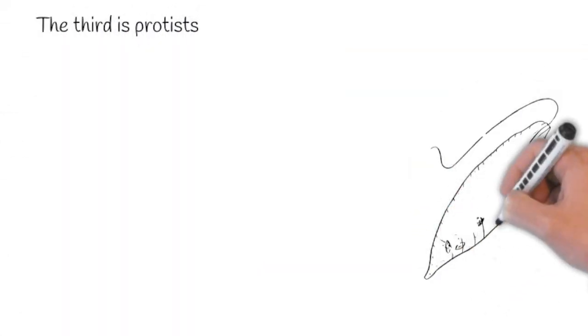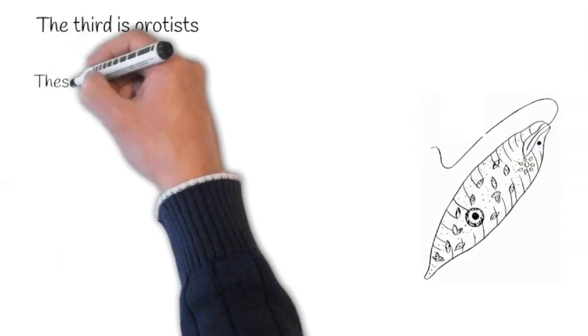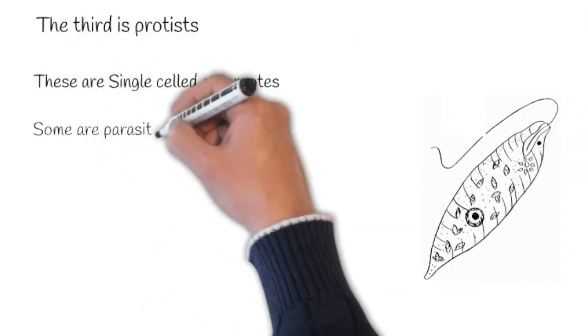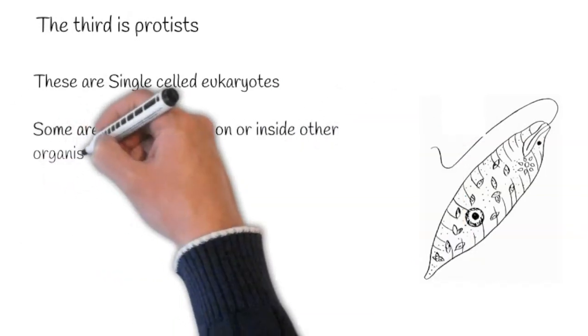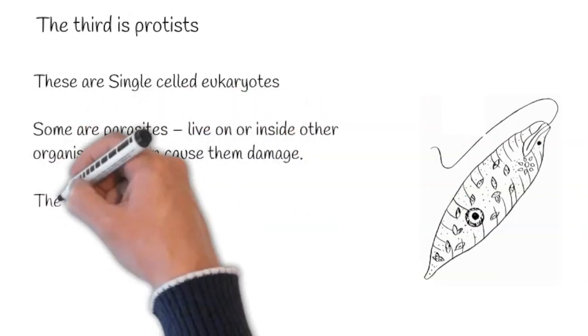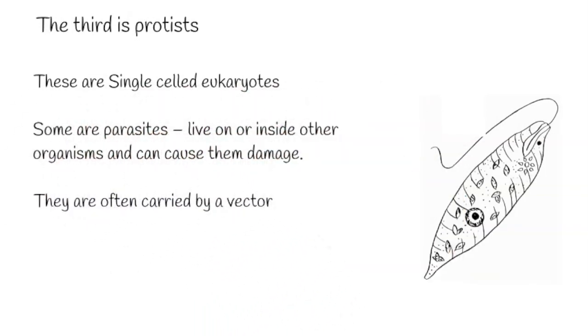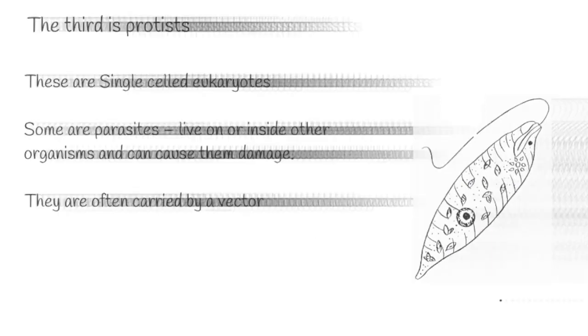The third is protist. These are single cell eukaryotes. Some are parasites, they live on or inside other organisms and can cause damage. They are often carried by a vector.